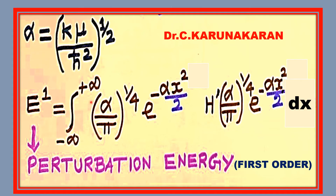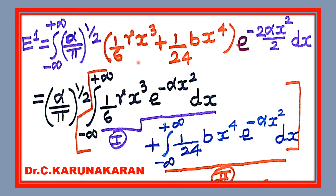On substituting the ground state wave function and the perturbation Hamiltonian, the perturbation energy expression is obtained. On multiplying the ground state wave function inside, you will get two integrals.